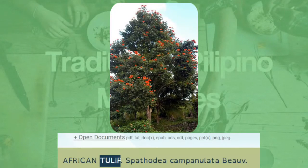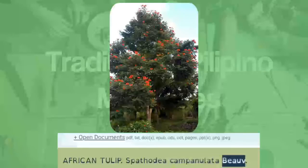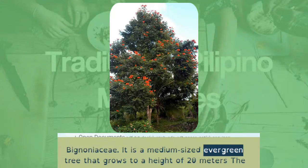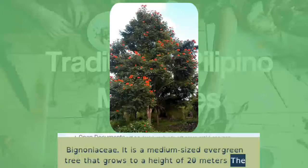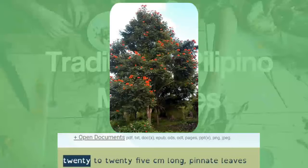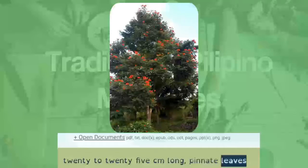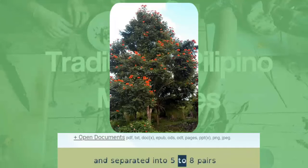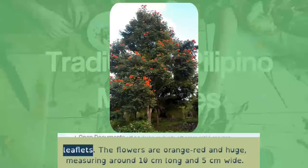African tulip, Spathodea campanulata, family Bignoniaceae. It is a medium-sized evergreen tree that grows to a height of 20 meters, with 20 to 25 cm long pinnate leaves, separated into 5 to 8 pairs of leaflets.